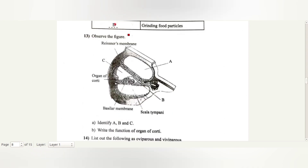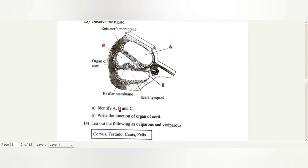Observe the figure. Identify A, B, C. A is scala vestibuli, B is tectorial membrane, C is scala media. Write the function of the organ of Corti. The organ of Corti contains hair cells which act as auditory receptors.